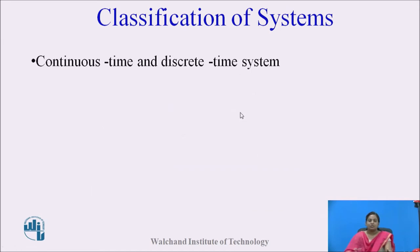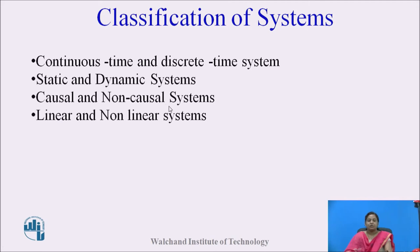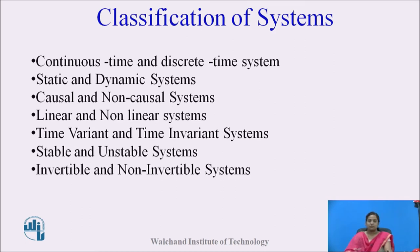Let us see the classification of the system. Systems are classified into: continuous time and discrete time systems, static and dynamic systems, causal and non-causal systems, linear and non-linear systems, time-variant and time-invariant systems, stable and unstable systems, and invertible and non-invertible systems.